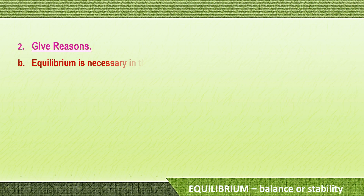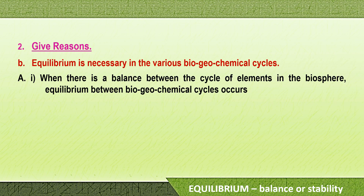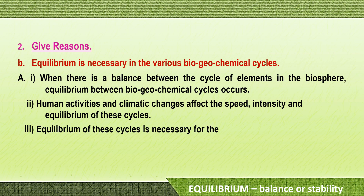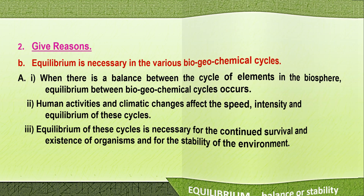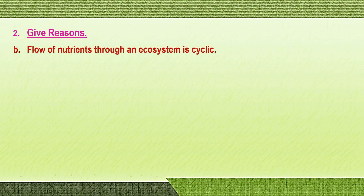Second reason: equilibrium is necessary in the various biogeochemical cycles. When there is a balance between the cycle of elements in the biosphere, equilibrium between the biogeochemical cycles occurs. Equilibrium means balance or stability. Human activities and climatic changes affect the speed, intensity, and equilibrium of these cycles. Equilibrium of these cycles is very necessary for the continued survival and existence of organisms and for the stability of the environment.